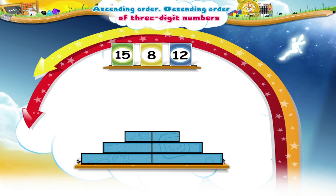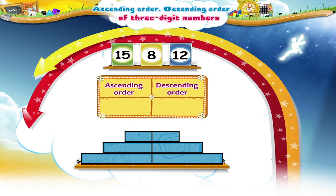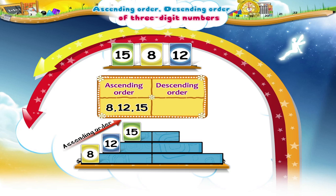Very good! So now, tell me the ascending order of these numbers. The ascending order is 8, 12, and 15. Now tell me the descending order, that is, from the biggest to the smallest number. The descending order is 15, 12, and 8.